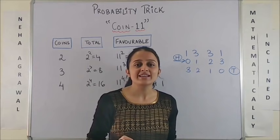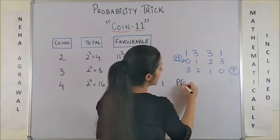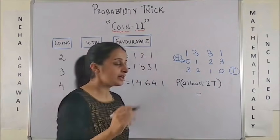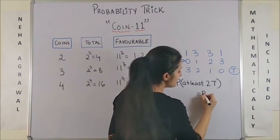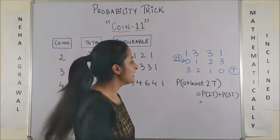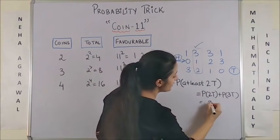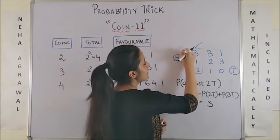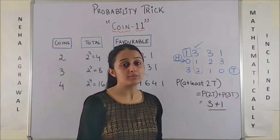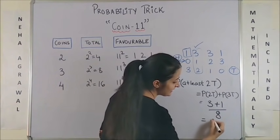Now, suppose the question says if 3 coins are tossed, what is the probability of getting at least 2 tails? Let's say this is the question. Now, at least 2 tails means 2 tails and all 3 tails. Correct? So, 2 tails from here would be this. So, the corresponding probability would be 3. And for all 3 tails, this, the corresponding probability is 1. So, 3 plus 1 are the favourable number of outcomes. And since 3 coins are tossed, so this is automatically 8.